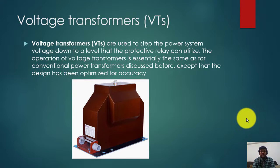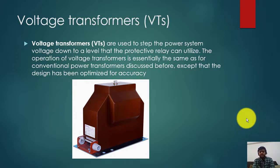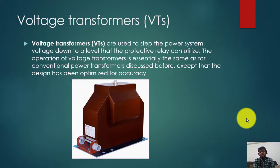For example, if the primary voltage is 11 kV or 132 kV, this voltage cannot be connected directly to the metering system or to distance relays. So you have to step it down. A step-down transformer will reduce the voltage from 132 kV to 110 volts or 100 volts at the secondary side, which is then connected to a relay.